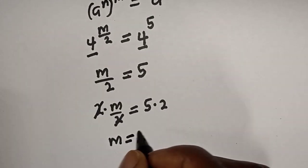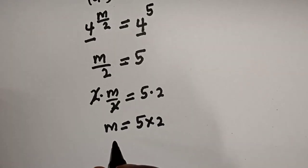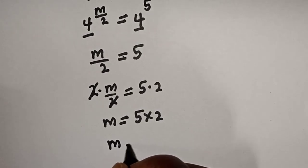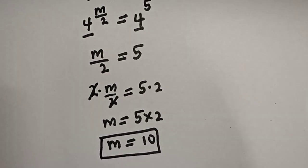m is equal to five times two, then m is equal to ten. And this is the final answer.